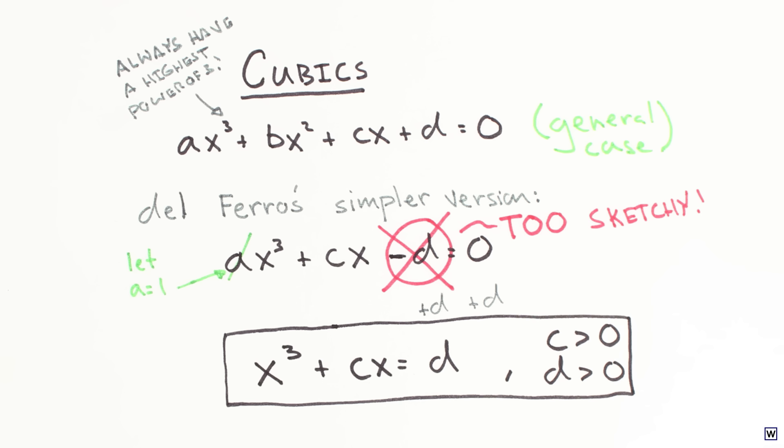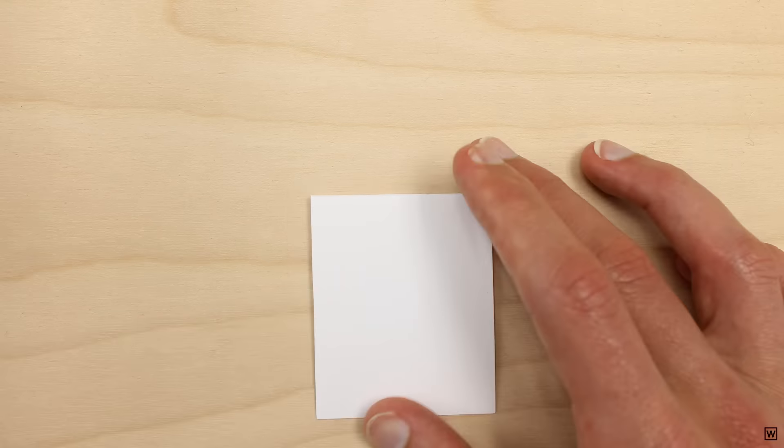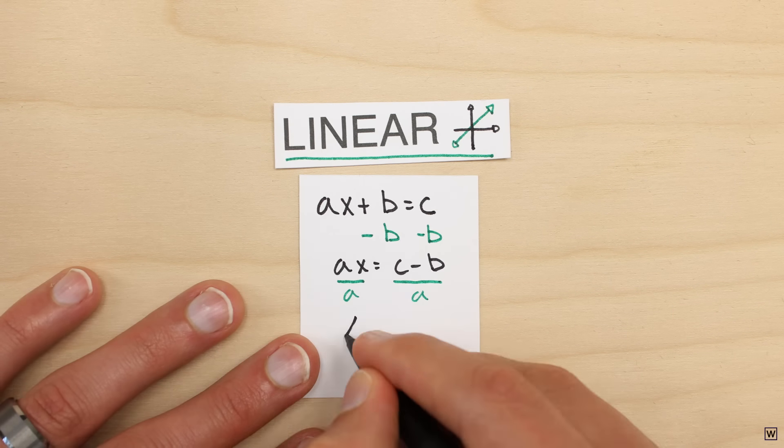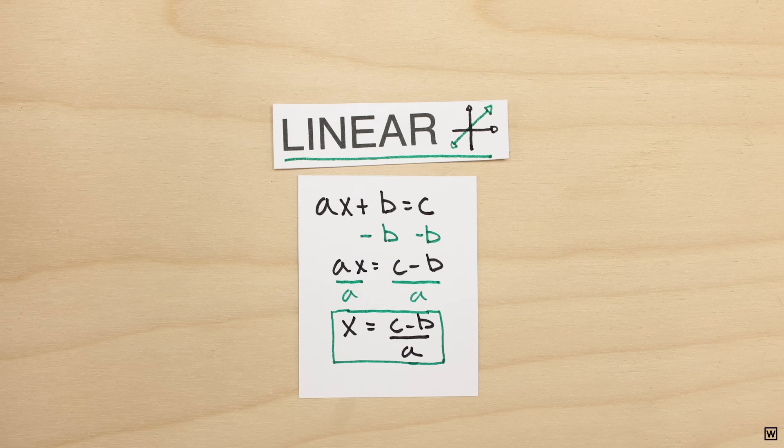Now that we have our equation set up, the game here is to get x by itself on one side and all the constants on the other side. This is pretty easy in linear equations. We can just add, multiply, divide, or subtract until we get x alone.